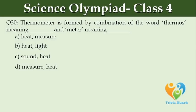Thermometer is formed by combination of the word 'thermos' meaning dash and 'meter' meaning dash. Option A: Heat, measure. Option B: Heat, light. Option C: Sound, heat. Option D: Measure, heat.